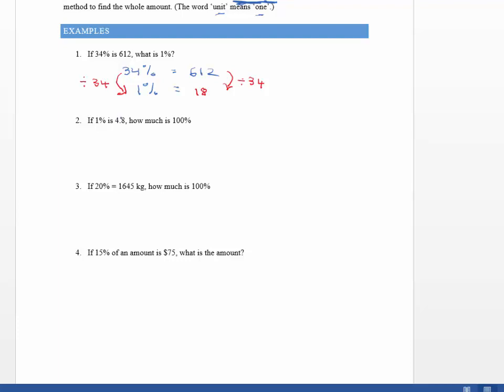So let's have a look at this next question. If 1% is 4.8, so I've got 1% and it equals 4.8. So here I've already got my 1%, I'm not being asked to find it. I'm now asked how much is 100%. So I'm going to put that 100% in my percentage column, I'm calling that a column because it goes underneath it.